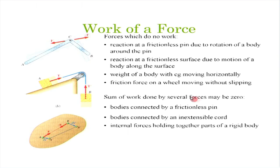If two bodies are connected by a frictionless pin, changing the angle between them produces no internal virtual work, since there is no internal moment at the joint. If bodies are connected by an inextensible cord, the tension T does no work since there is no effective displacement of the cord. Internal forces within a rigid body also do not do any work. We keep these principles in mind when applying the Principle of Virtual Work to find support reactions and stability forces.